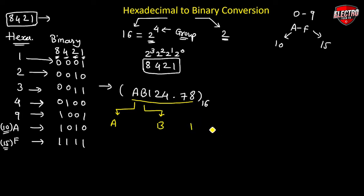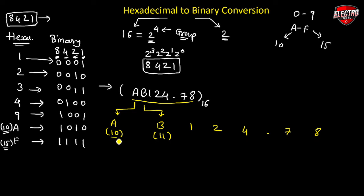To convert digit A, we must know that A equals 10 in decimal, and B equals 11. To convert 10 into binary using the 8-4-2-1 code, we use 8 plus 2, which equals 10, giving the binary representation 1010.